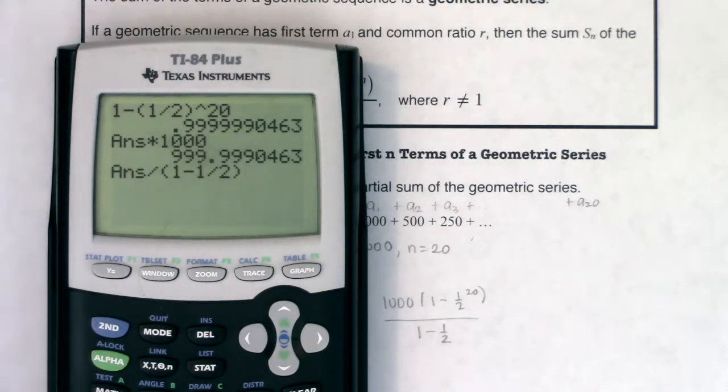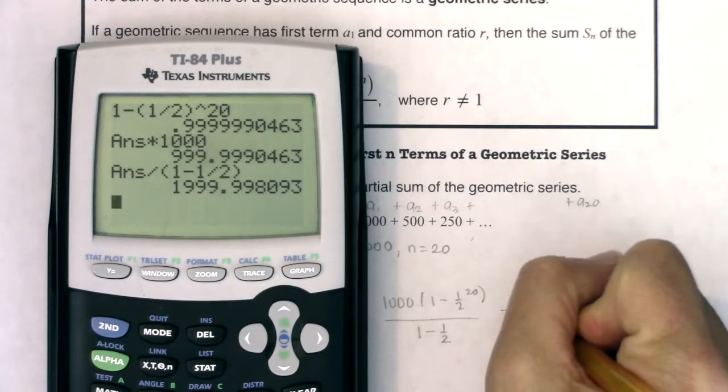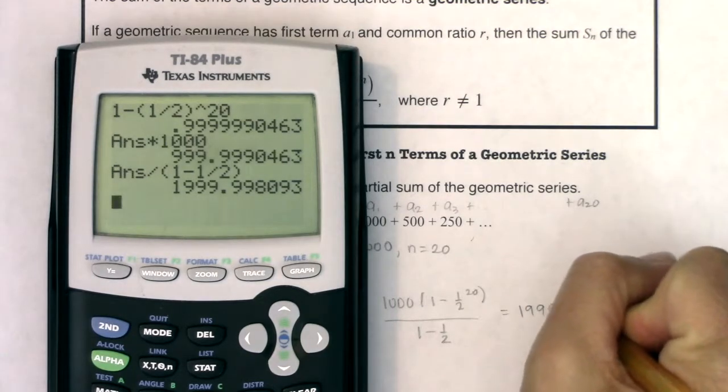And then I'm going to divide that by 1 minus 1 half. And I'm putting parentheses around that denominator because it's a binomial. I've got two terms. So I need to protect it.